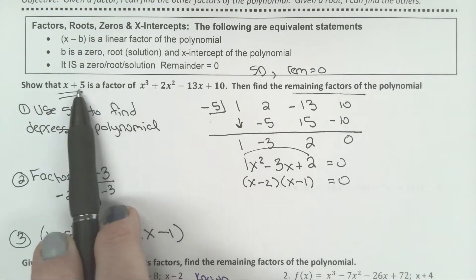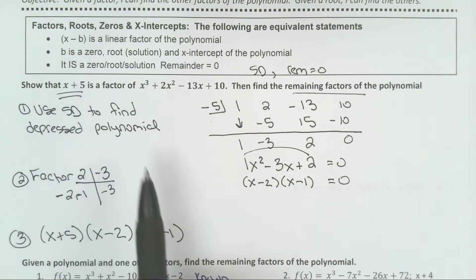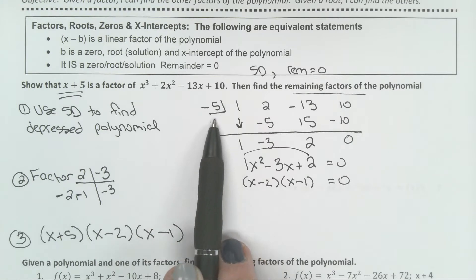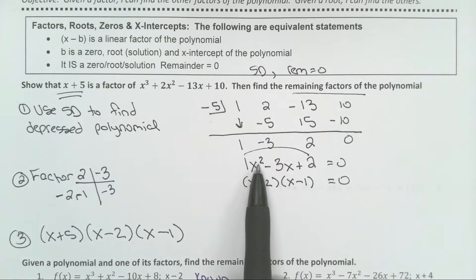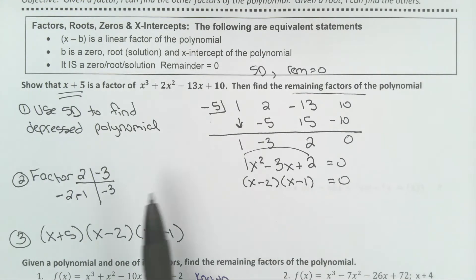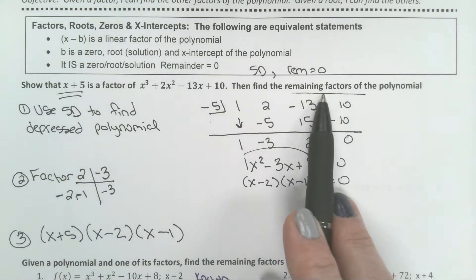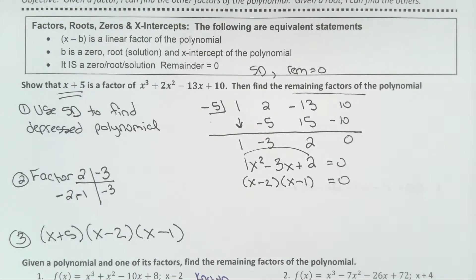So once you know one factor, you take that number and do synthetic division, and once you get it down to a quadratic, you either factor it — here you had to make an ACB chart and factor it.